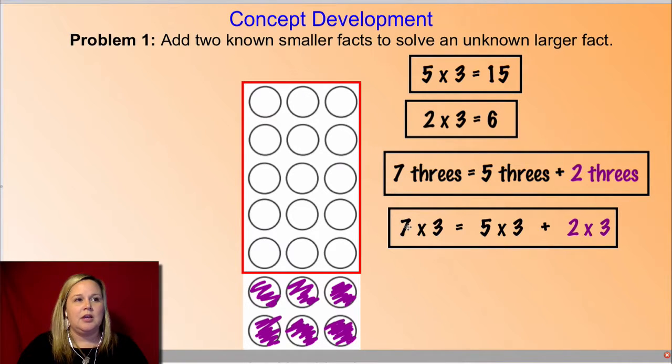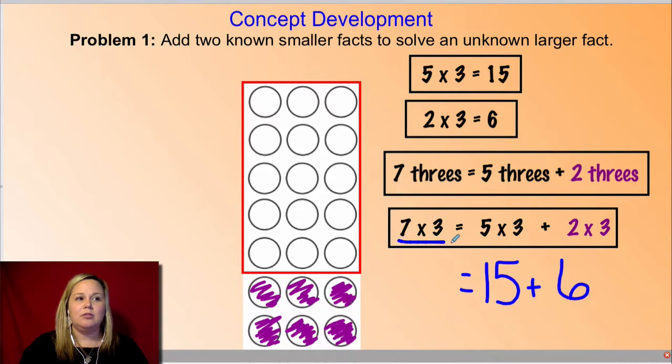So let's look at this, friends. 7 x 3, which is our whole array, equals the same as if you took 5 x 3, this first part, and added it to the bottom of 2 x 3. It's going to give us the same thing. So let's kind of break this down a little bit. If you have 5 x 3, what's the product of 5 x 3? Fifteen. I'm going to add that to the product of 2 x 3. What's the product of 2 x 3? That's our shaded part. Six. So now if I add all of those together, that's going to give me the total of 7 x 3. So if I have 15 + 6, that gives me a total of 21. Good job, friends. Fantastic job.